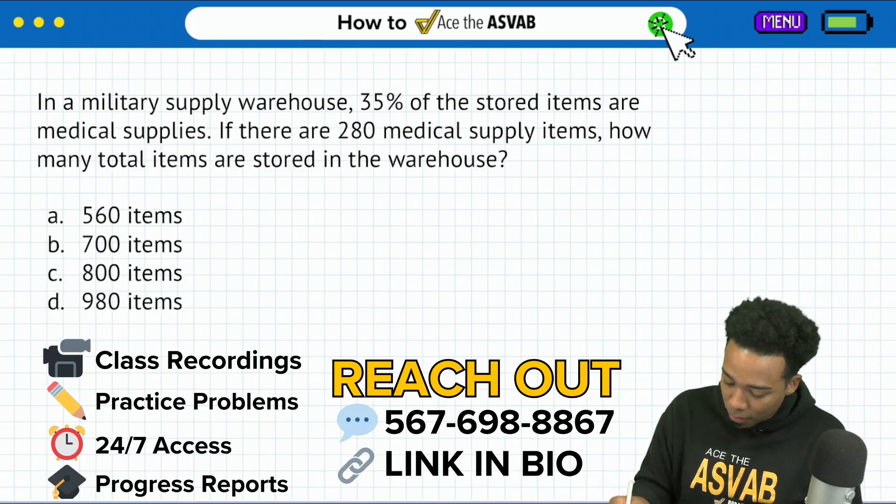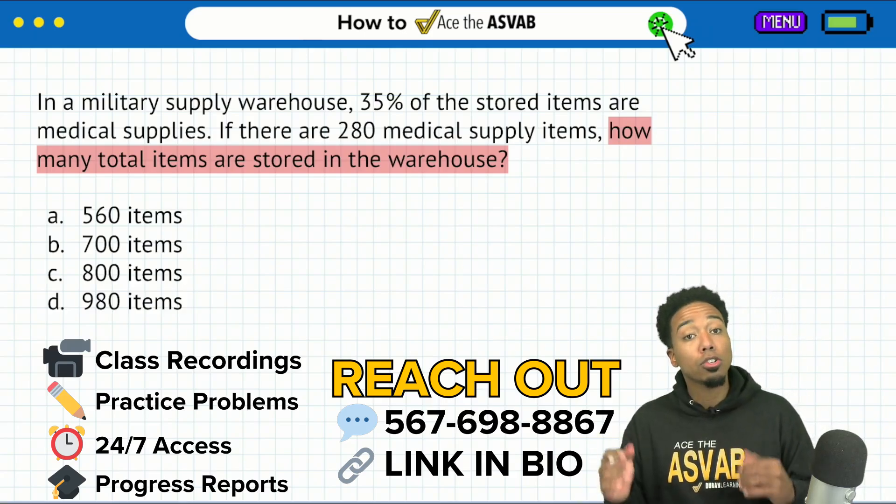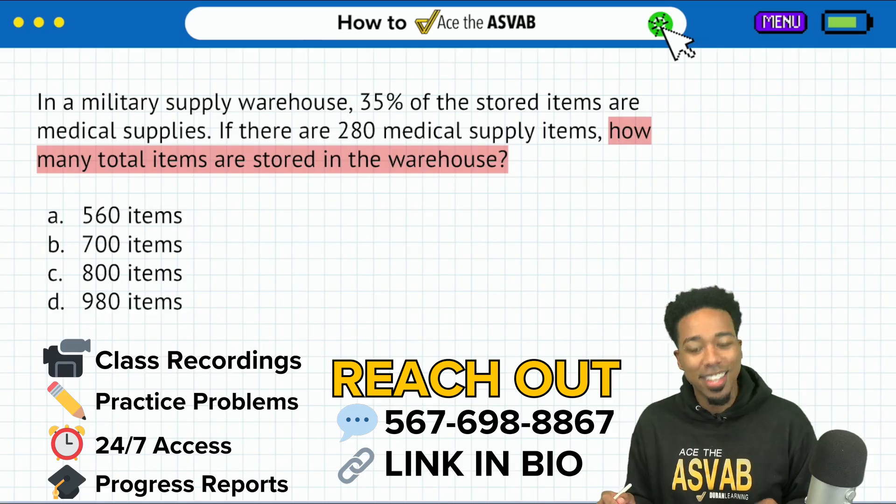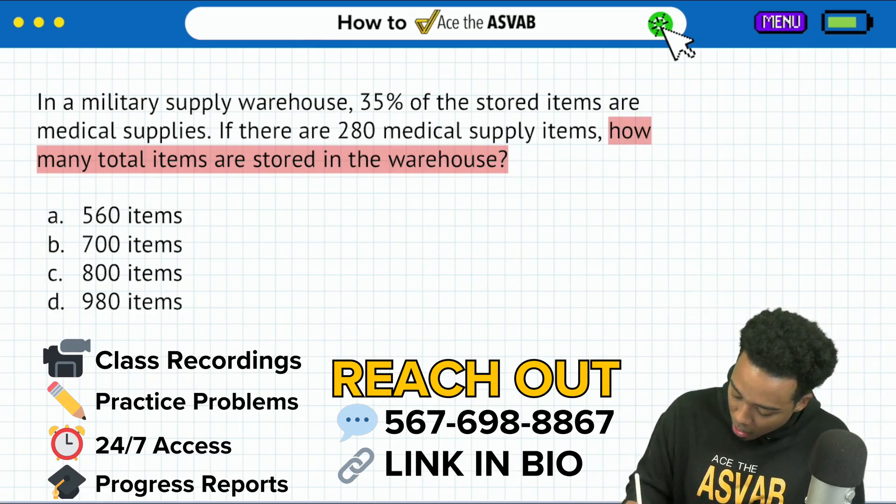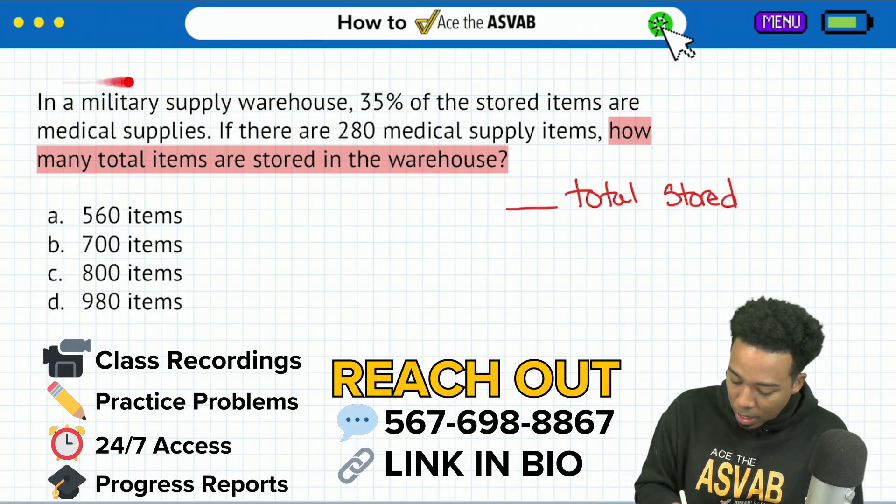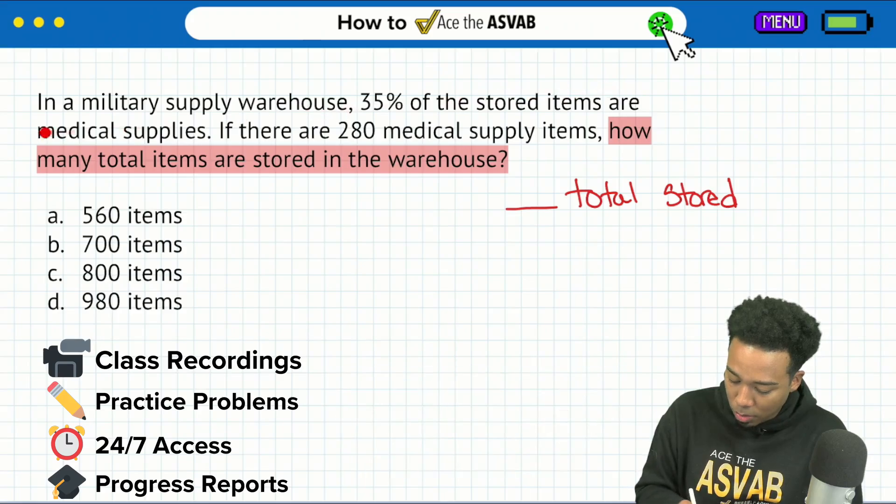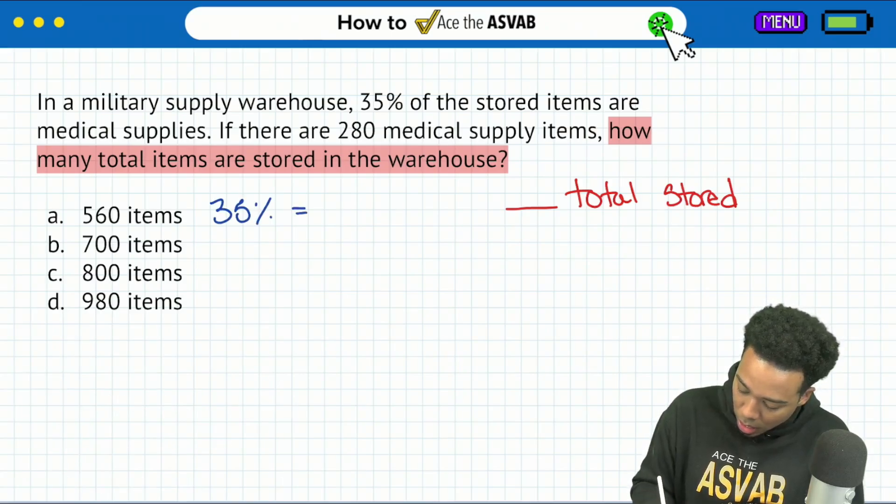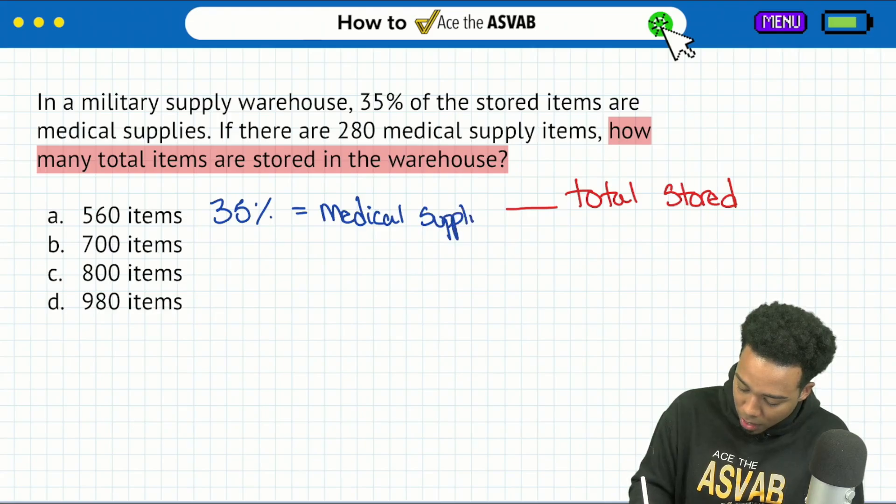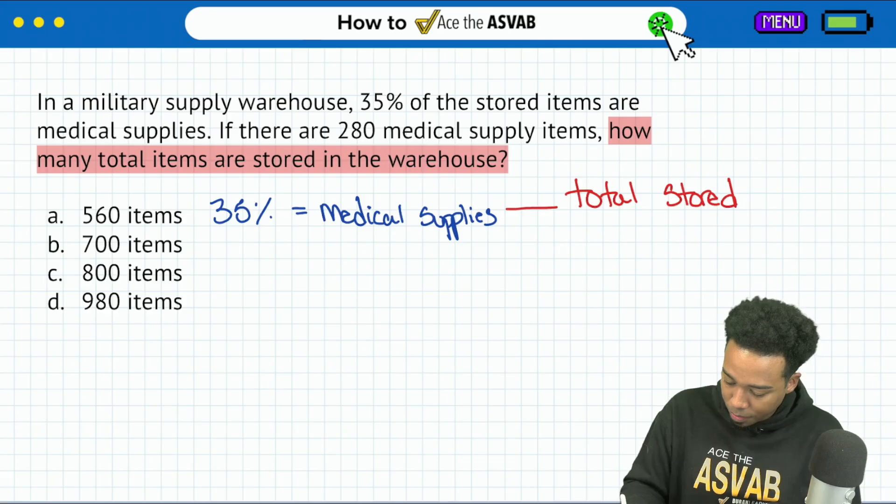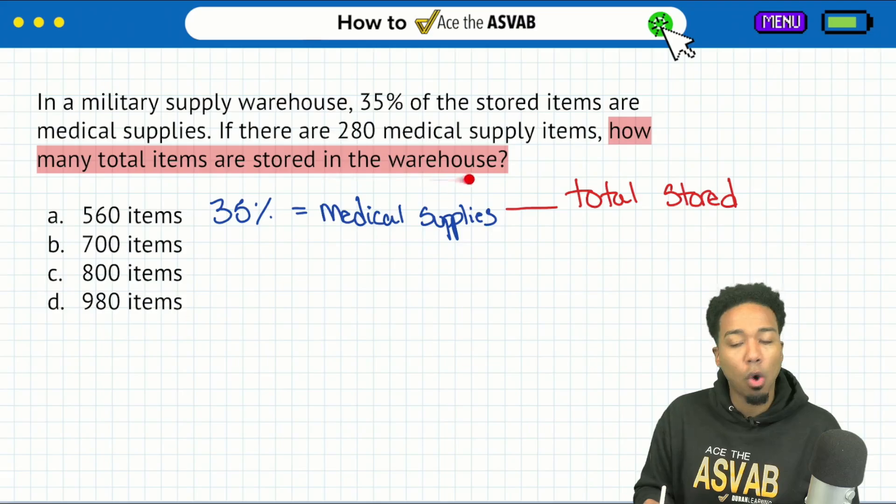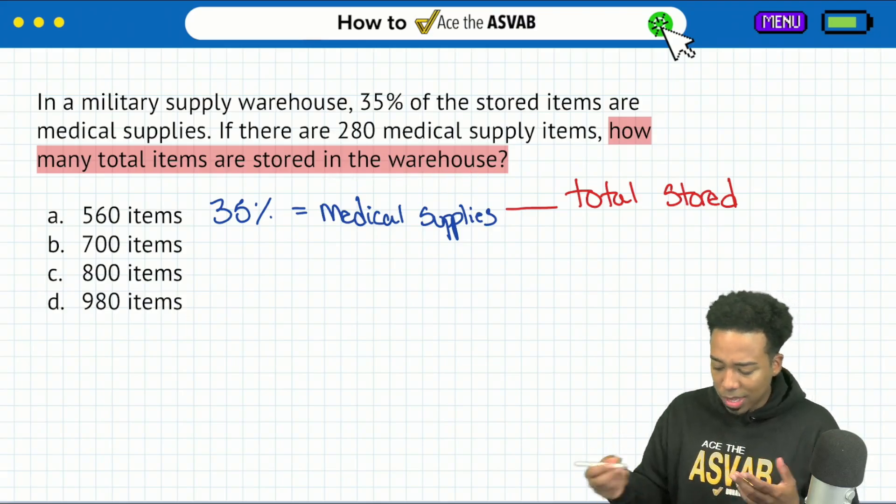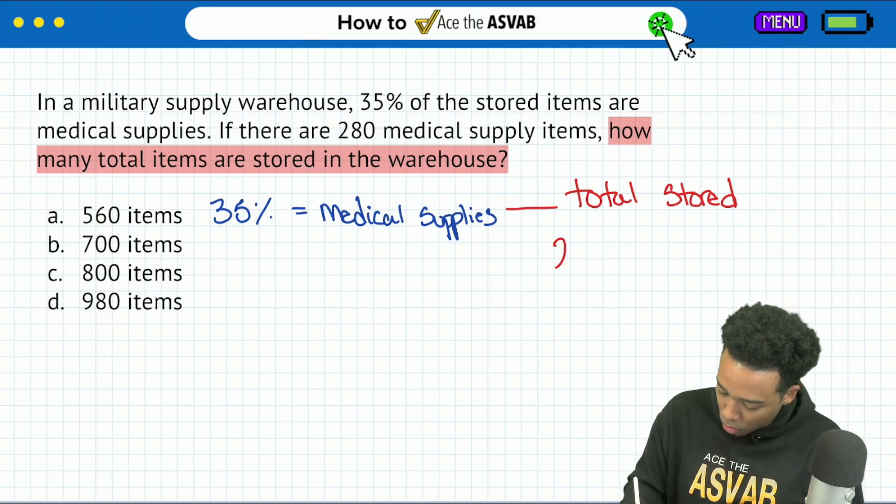So let's go ahead and solve number two. So with this one here, the goal of the question is to find how many total items are stored in the warehouse. Sounds good. How many total items are stored in the warehouse? Blank total stored. Next, what do we see? In a military supply warehouse, 35% of the stored items are medical supplies. So let me write this over here. 35% is going to account for medical supplies. Perfect. And then it says that if there are 280 medical supply items, how many total? So how do we make this comparison? So here we have blank total, 280 medical.